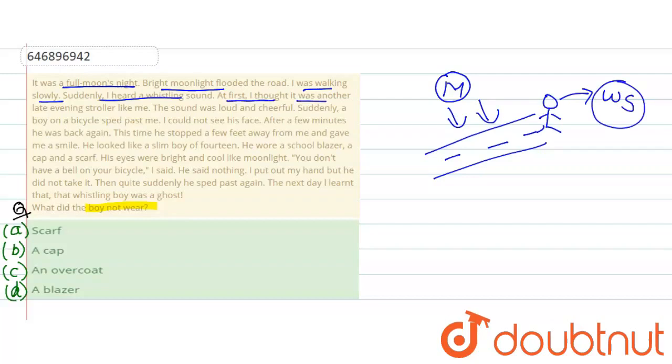At first I thought it was another late evening stroller like me. Woh kya kehta hai ki pehle mein ne socha ki meri tarah koi late night stroller hai. Stroller ka kya matlab hota hai? Vagabond. Agar hum Hindi mein bolen, toh iska matlab hota hai ghumakkad. Yaani jisko ghumna phirna pasand hai. That is vagabond, or ghumakkad, or stroller. Yaani usko lagta hai ki meri tarah hi koi doosra stroller hai jo ghum raha hai.